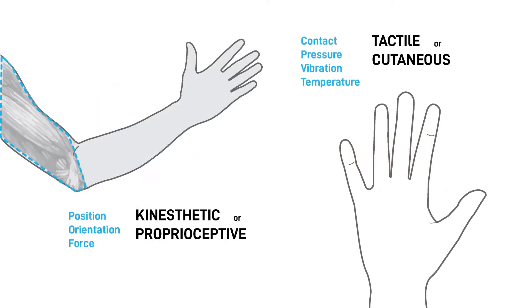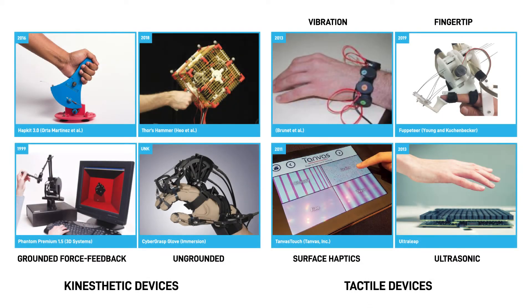In the previous chapter, you saw that human touch sensing is composed of kinesthetic sensing through muscles and joints, and tactile sensing via receptors in the skin. Within this context, haptic devices are commonly categorized into kinesthetic or tactile devices based on whether they primarily stimulate the muscles or the skin.